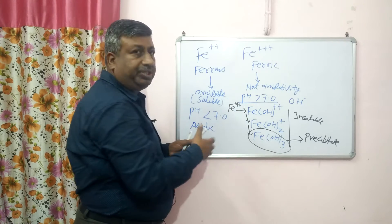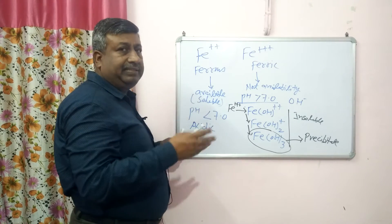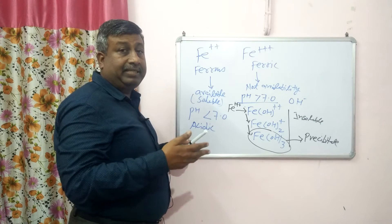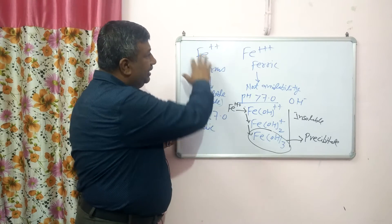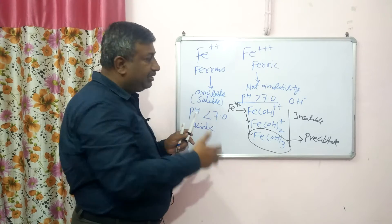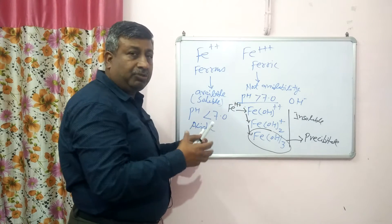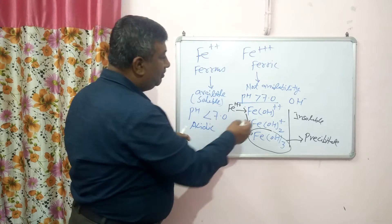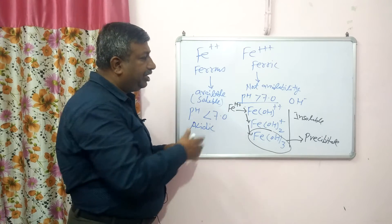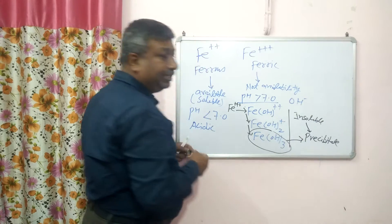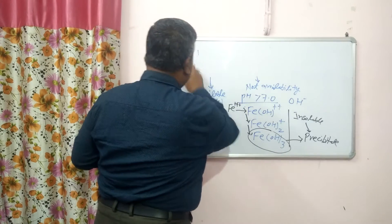So when pH is less than 7, meaning acidic conditions, ferric and ferrous species dominate. When pH is more than 7, hydroxide species formation increases because hydroxyl ion concentration is greater. As hydroxide forms, it bonds with iron and solubility is reduced. So the more hydroxide formation, the lower the solubility of iron in the soil solution.